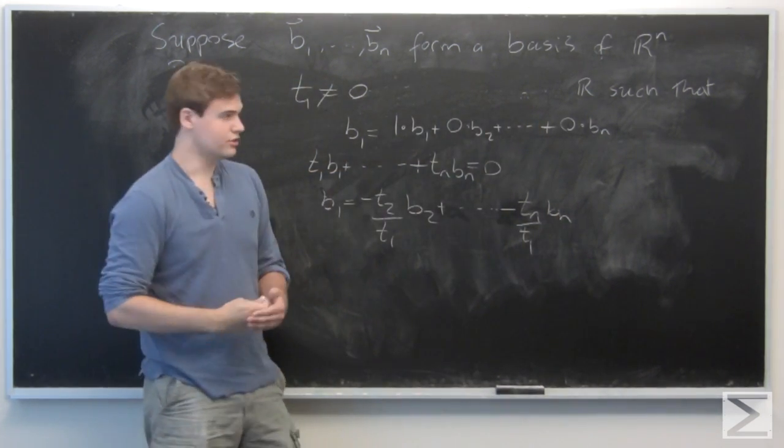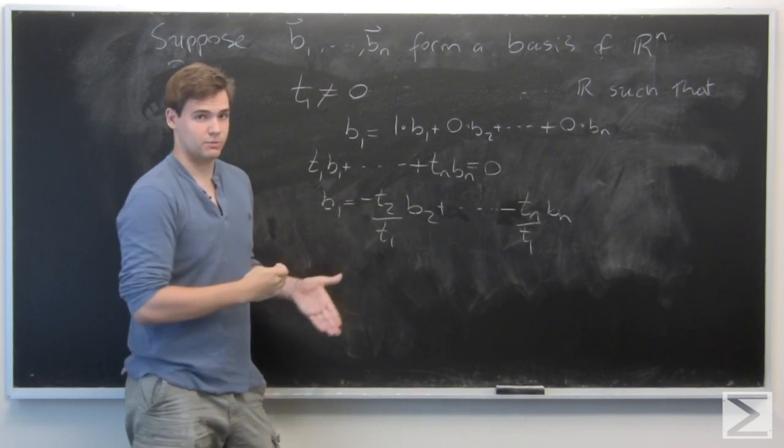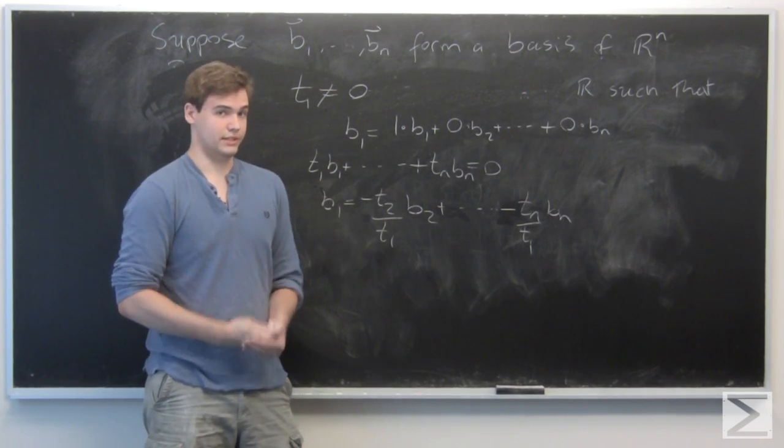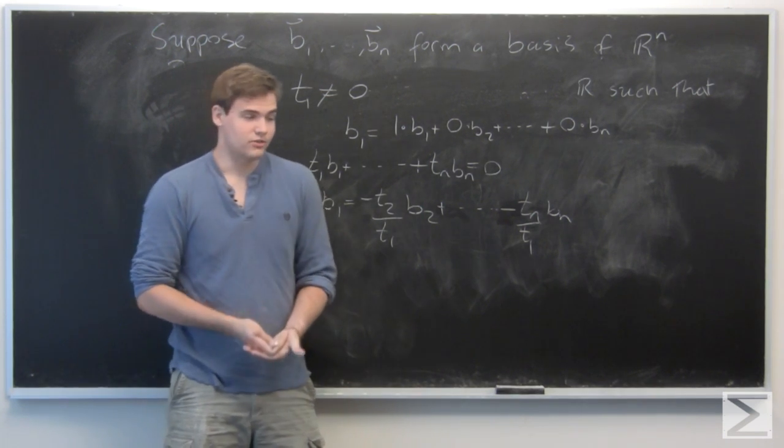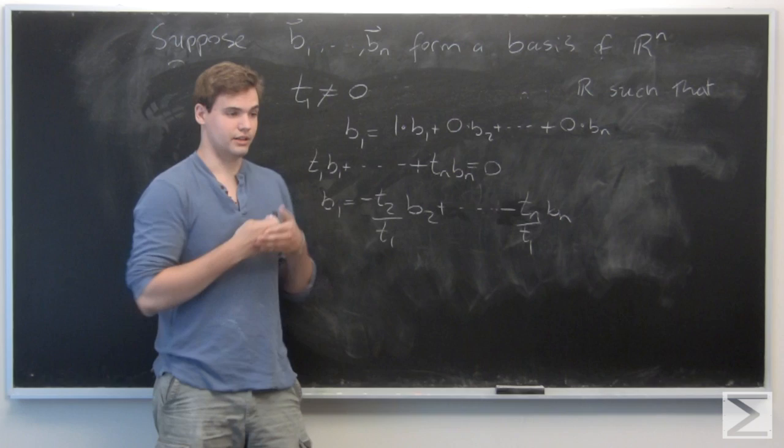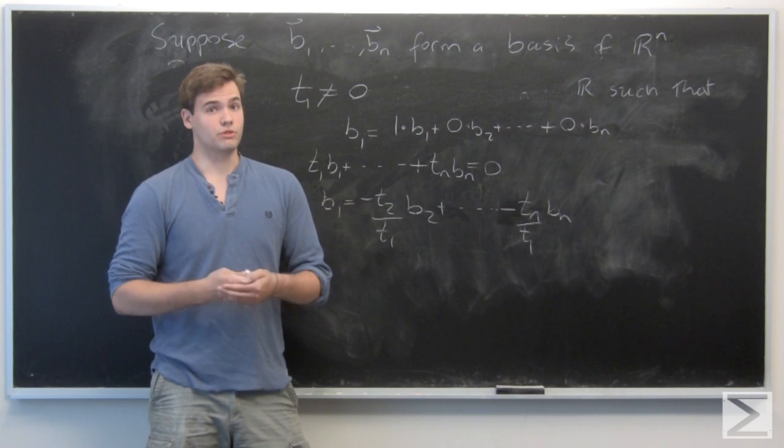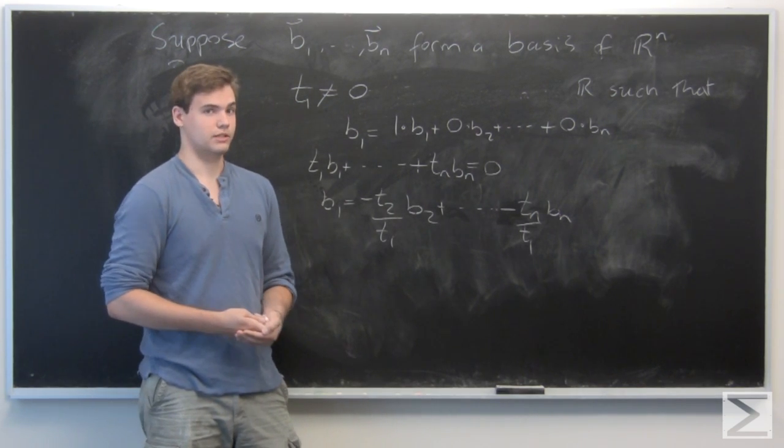So now we have two different expressions for B₁ in terms of the basis elements. But this is a contradiction because we assumed, or sorry, the definition of a basis means that every element in the vector space has a unique expression in terms of the other basis elements.